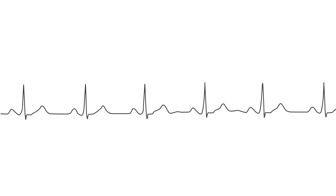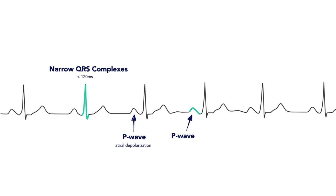In normal sinus rhythm, QRS complexes are narrow and always preceded by P waves. P waves should always come before QRS complexes — this is what defines a sinus rhythm.